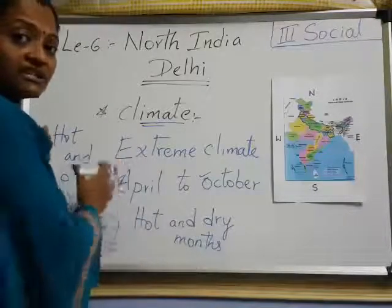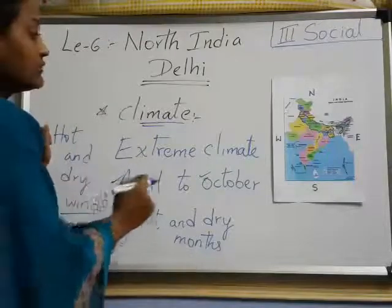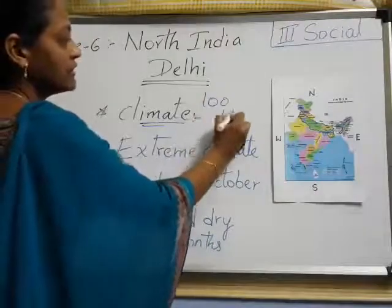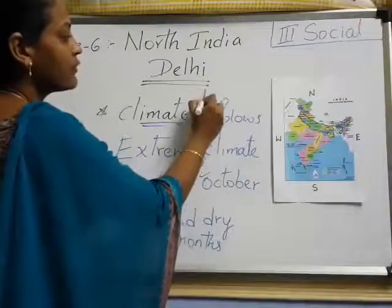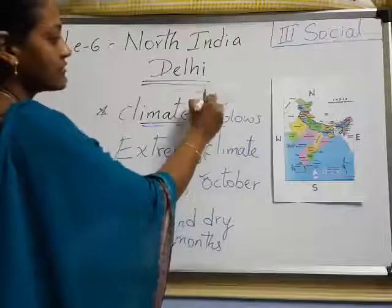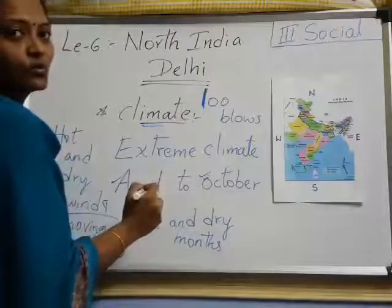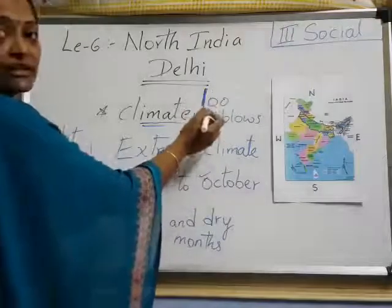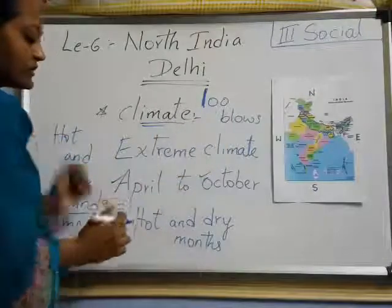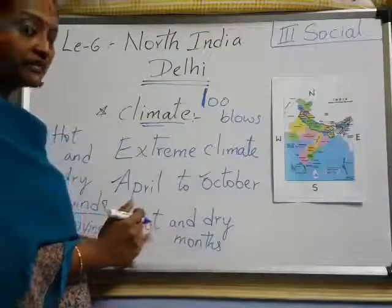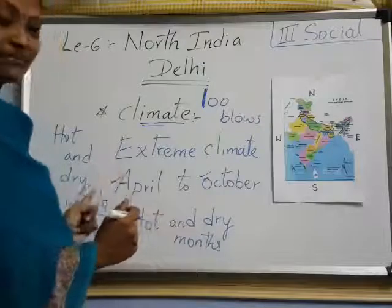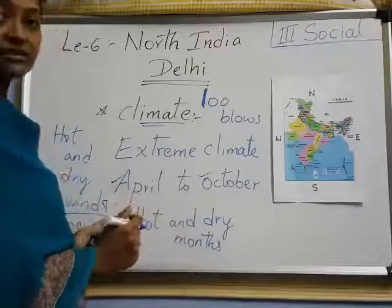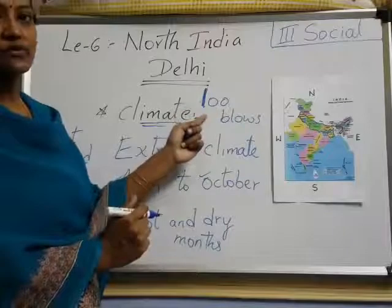And do you know, these winds have a particular name? We call it as — like hot and dry winds — Loo blows. What do we call, children? Loo. Remember — L-O-O. Loo. Hot and dry winds, if they are blowing in these months, the specific word we use is Loo. So from which month to which month do we find this summer — nothing but hot and dry winds? From April to October. And the winds are hot and dry winds — those we call as Loo blows.